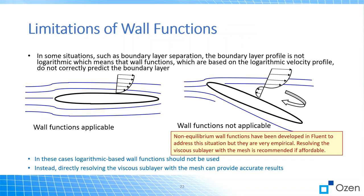An example shows when wall functions are not sufficient: for flow around an airfoil with no separation, wall functions are generally sufficient for good accuracy. However, when the angle of attack changes such that there's flow separation with recirculation, wall functions become less applicable, and resolving the viscous sublayer is needed for more accurate prediction of separation location and recirculating behavior downstream.